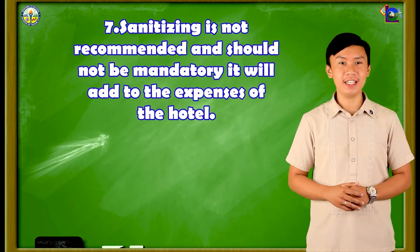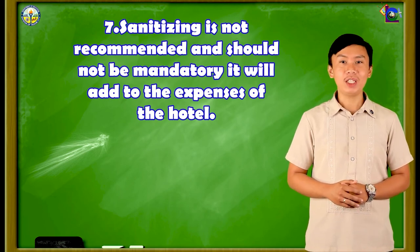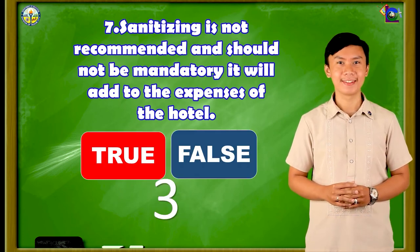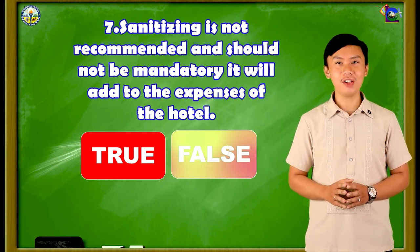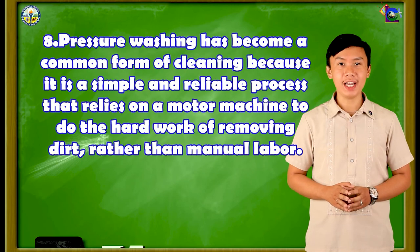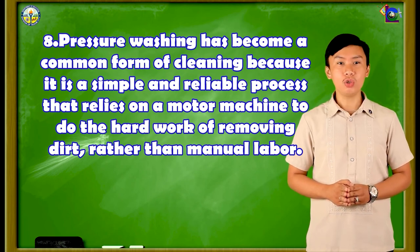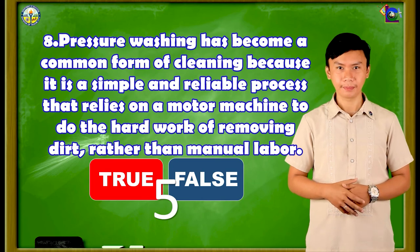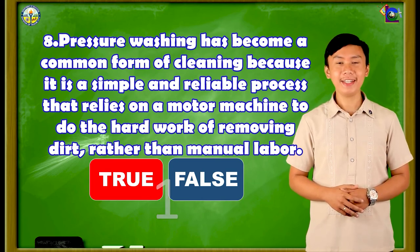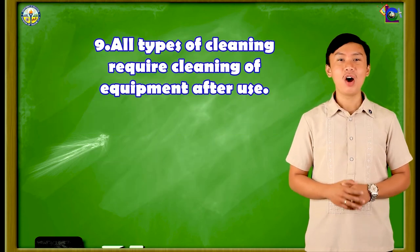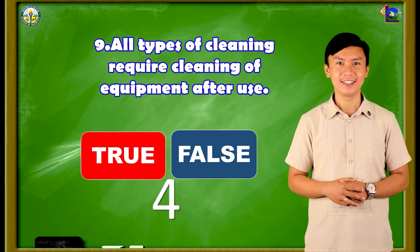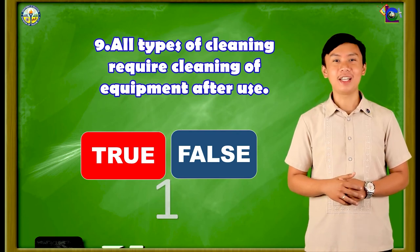Number 7: Sanitizing is not recommended and should not be mandatory — it will add to the expenses of the hotel. True or false? The correct answer is FALSE. Number 8: Pressure washing has become a common form of cleaning because it is a simple and reliable process that relies on a motor machine to do the hard work of removing dirt rather than manual labor. True or false? The correct answer is TRUE.